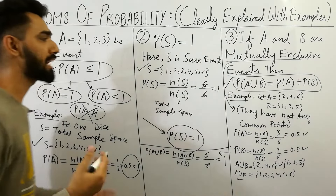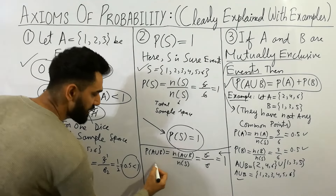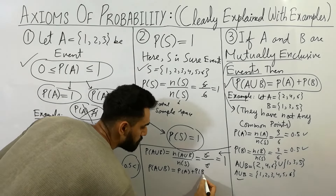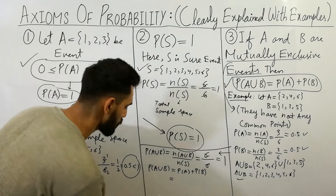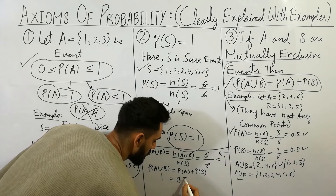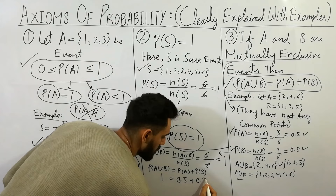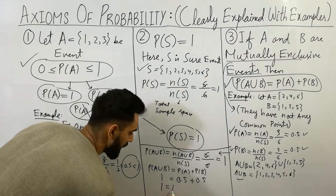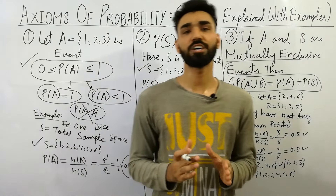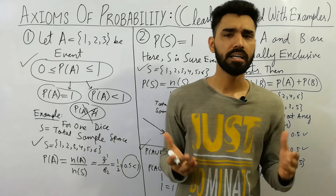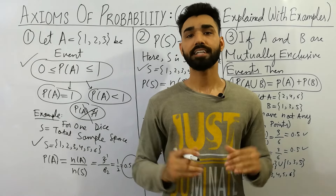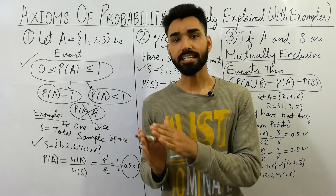Now I'm going to prove that probability of A union B equals probability of A plus probability of B. Probability of A union B equals 1, and probability of A plus probability of B equals 0.5 plus 0.5 equals 1. So I have proved that probability of A union B is always equal to probability of A plus probability of B. Thanks for watching — probability is very, very easy. Please share this lecture with your classmates and friends, and don't forget to like and subscribe. Goodbye.